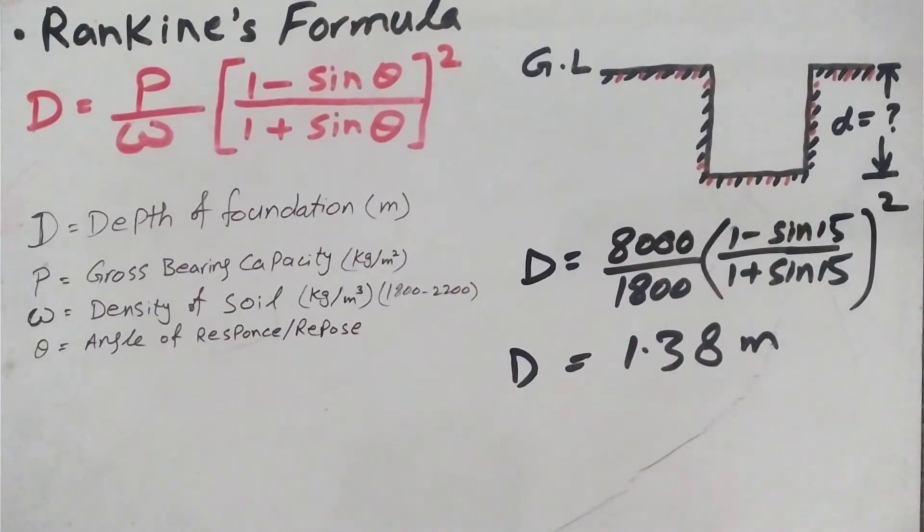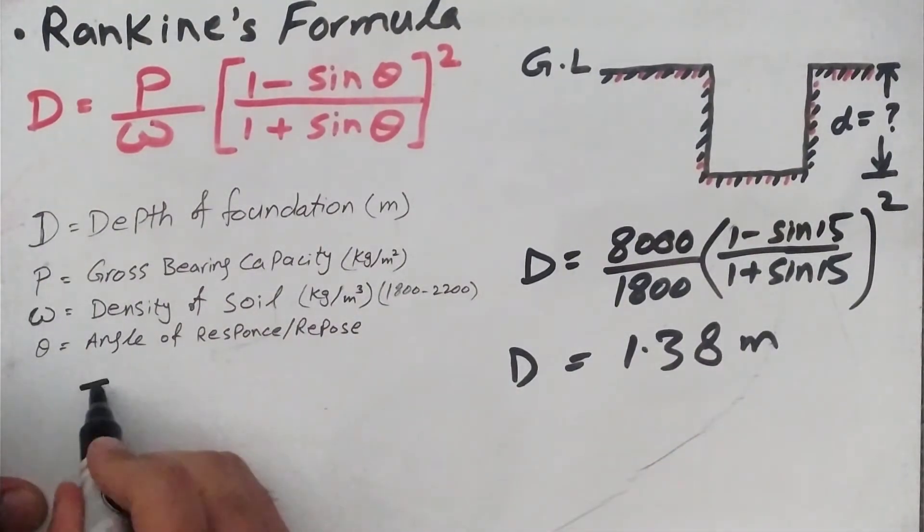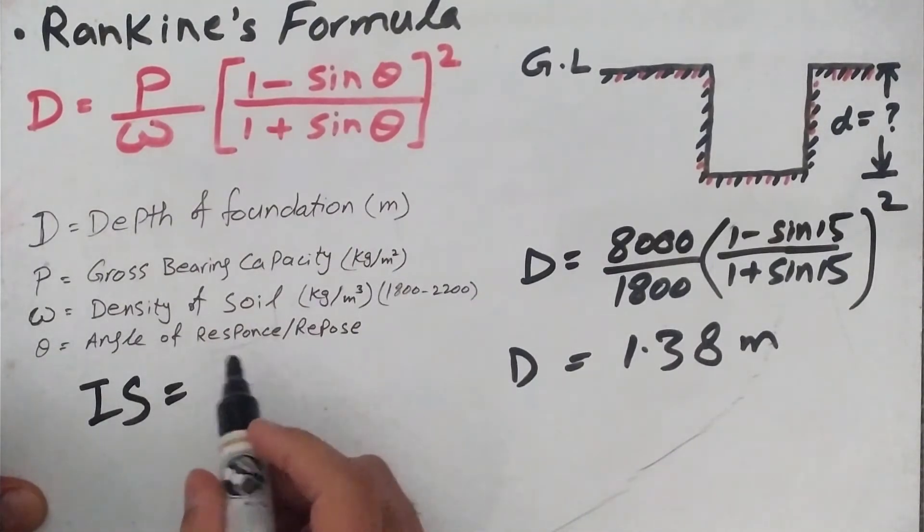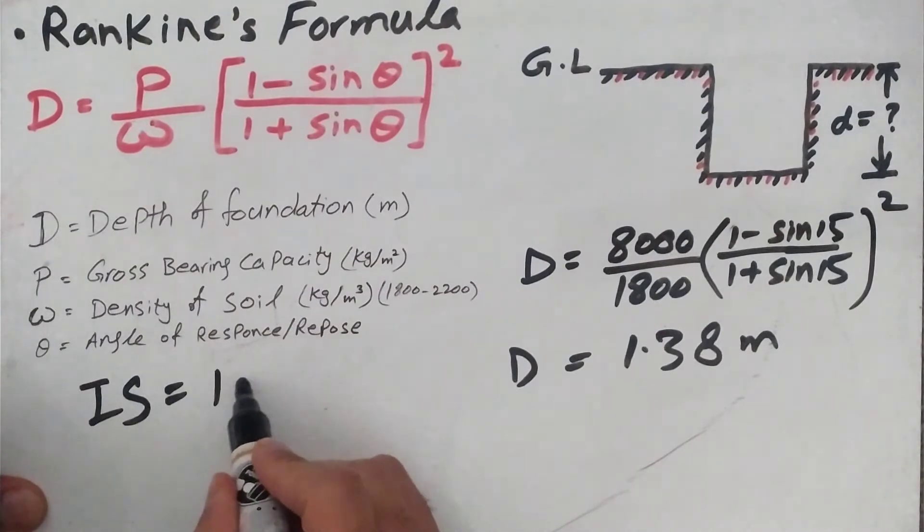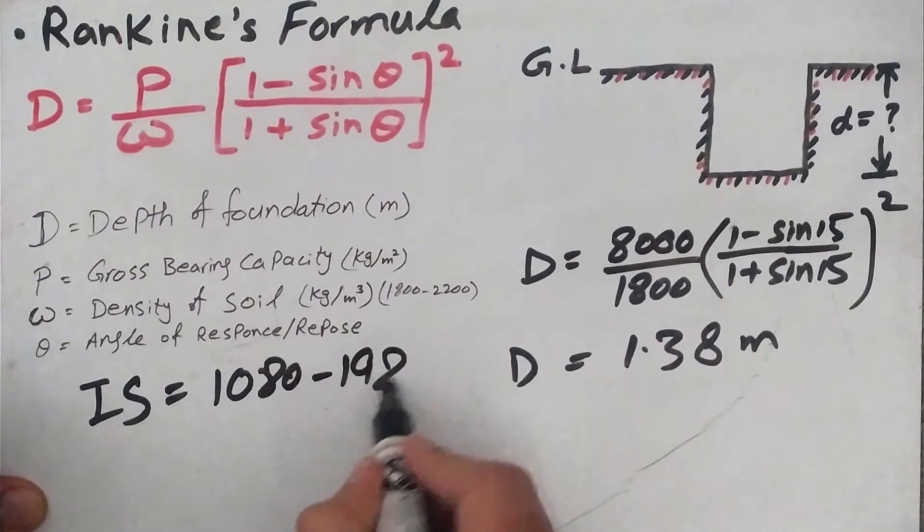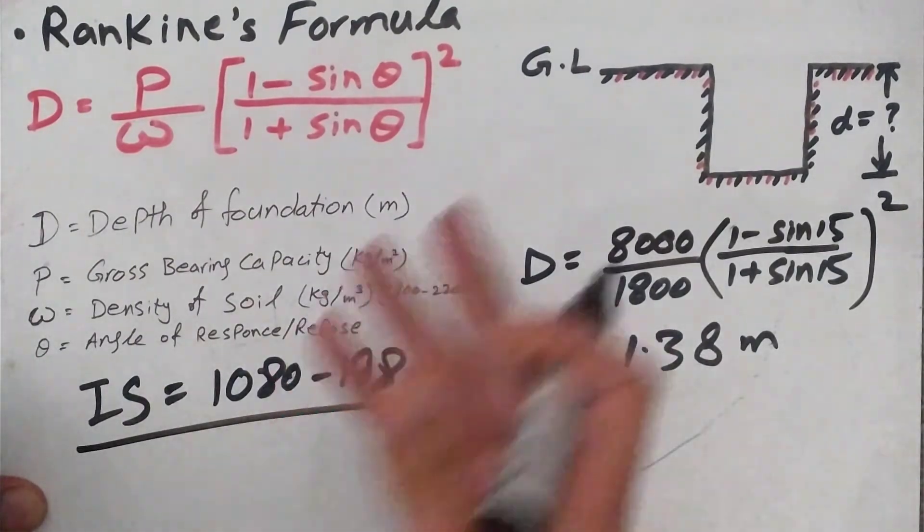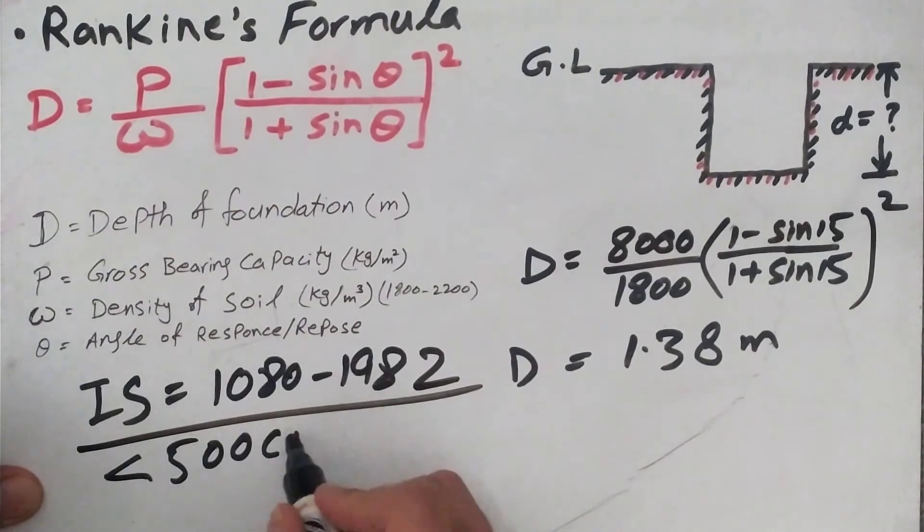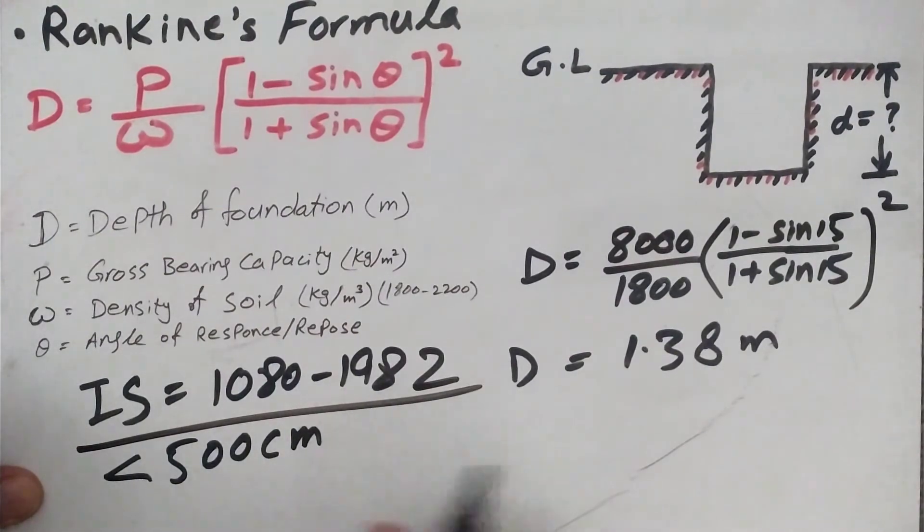According to IS standards, the code is 1080-1982. This is a reference point for the code. If you go and check this reference code, it will tell you how much the depth would be. So the depth should not be less than 500 centimeters. This is what the standard says.